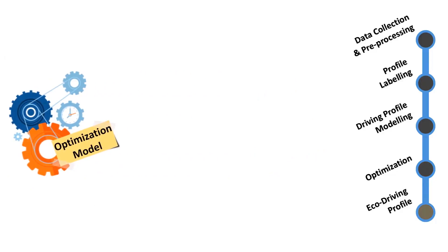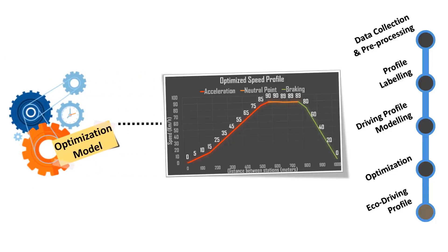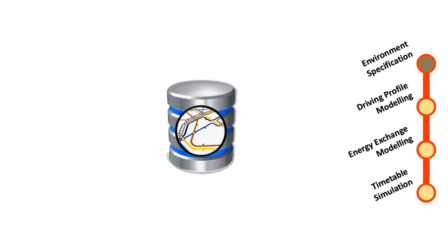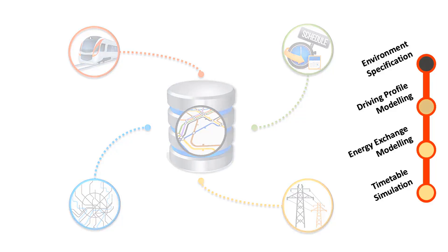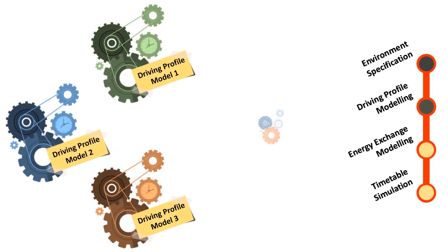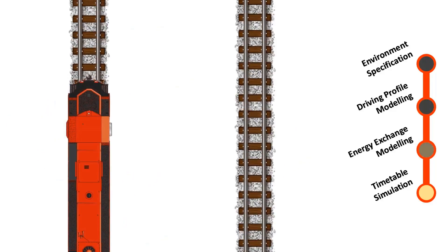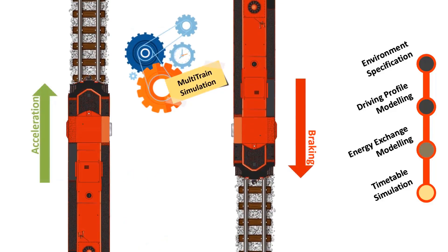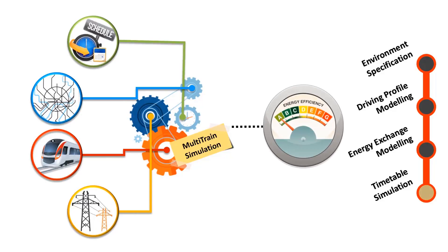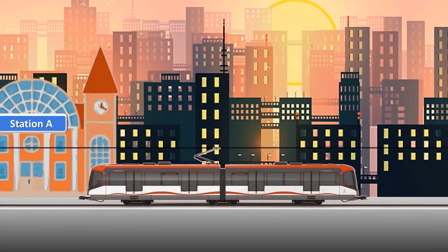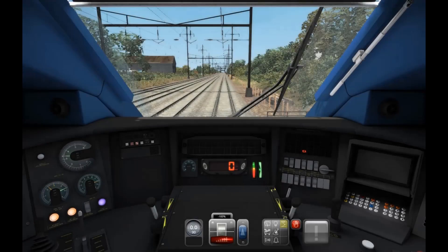The optimization constructs new realistic speed profiles from data, and the driving model assesses the energy use. An eco-driving profile is then suggested. For multiple trains, we need more data: train properties, timetables, railway network, and electricity supply. The multi-train simulation relies on many driving profile models and estimates the exchanged energy when two trains cross — the accelerating one recovers energy from the braking one. By tuning timetables, we find better energy efficiency scenarios.